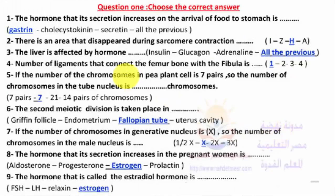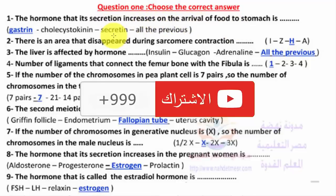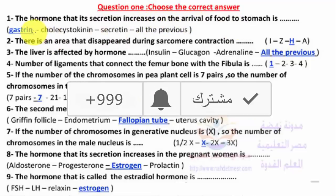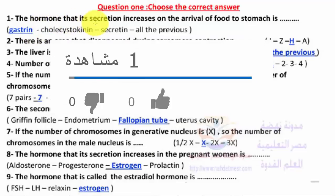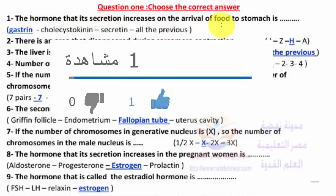First question: the hormone whose secretion increases on the arrival of food to the stomach is called gastrin. Gastrin is the hormone whose secretion increases when food arrives to the stomach.